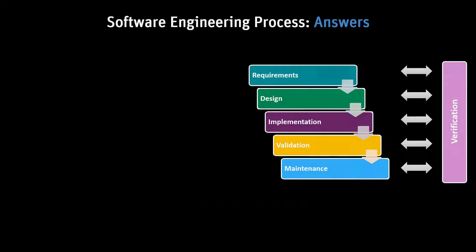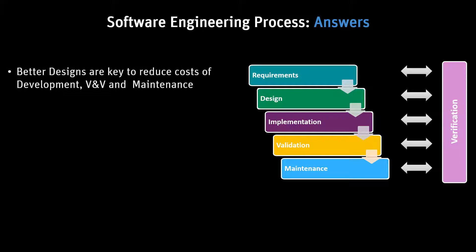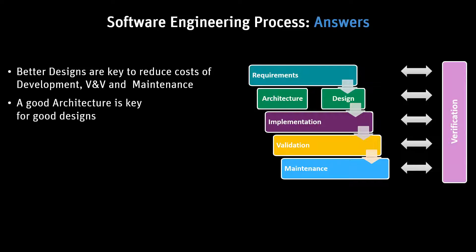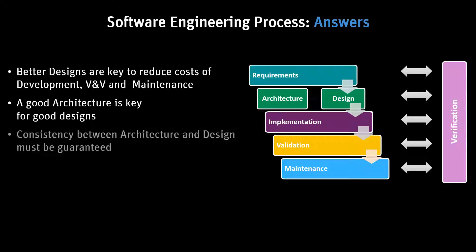Software engineering good practices start with a good architecture, from high-integrity level to low-integrity level applications. The consistency between the architecture and the design must be guaranteed by the process.